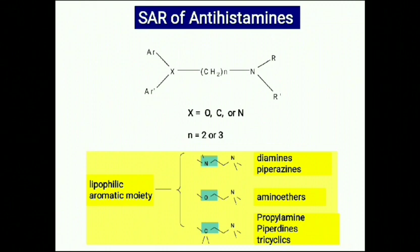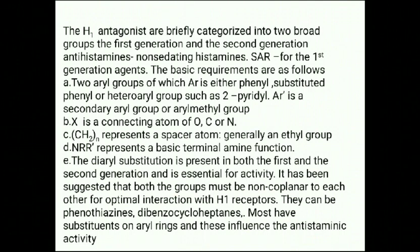If the X atom is oxygen and you have an ethyl group and the terminal amino group with alkyl groups attached, then it belongs to the amino ethers class. If X is carbon and you have an ethyl group and a terminal amino group with alkyl groups attached, then they belong to the class of propylamines and tricyclics.